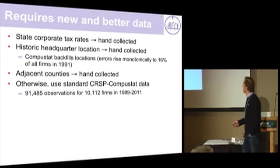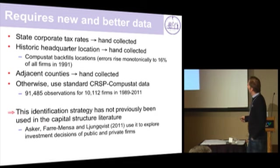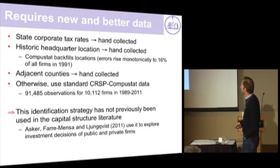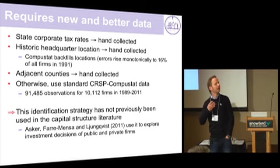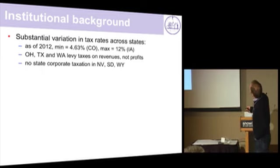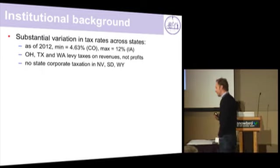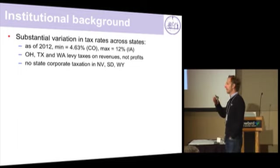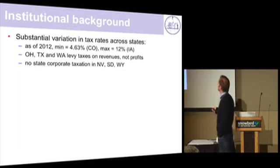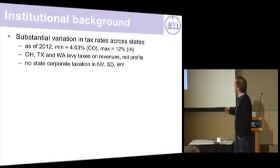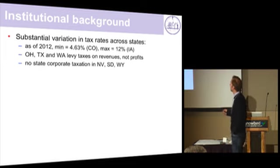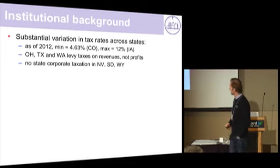In terms of capital structure, this hasn't been used before, but there's an antecedent project that Alexander has with co-authors where he looks at investment decisions of publicly and privately traded firms. Let me give you a little bit of institutional background. There is substantial cross-sectional variation in corporate tax rates at the state level. Colorado right now has the lowest, Iowa has the largest. But you have to be careful — some states tax revenues and not profits, so you have to exclude them. There's no corporate taxation in Nevada, South Dakota, or Wyoming.